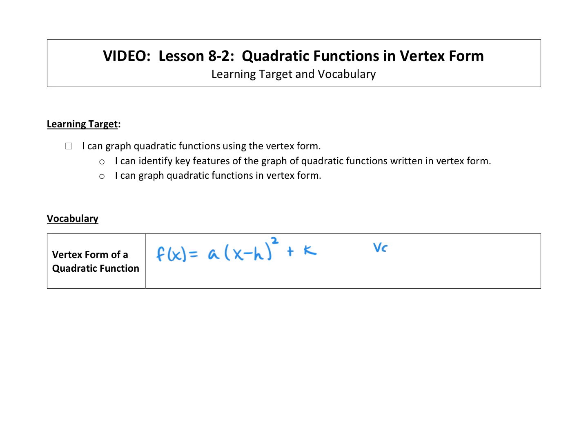The vertex is (h, k). The reason we call this vertex form is we're going to be able to see or pick out the vertex values right from the form.